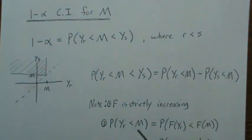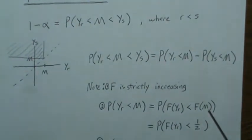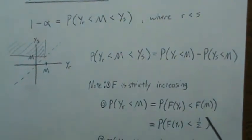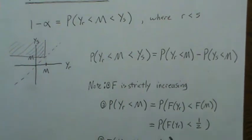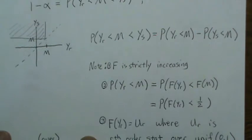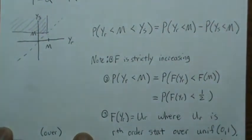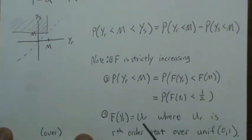And because of that, the probability that Y_R is less than the median, we can take capital F of both sides. So the probability that the CDF of Y_R is less than F of M. Well, F of M we know is a half because that's the median, and that's by definition. Well, the exciting part about this, capital F of Y_R, it can be shown that that is the Rth order statistic from a uniform distribution over zero to one.